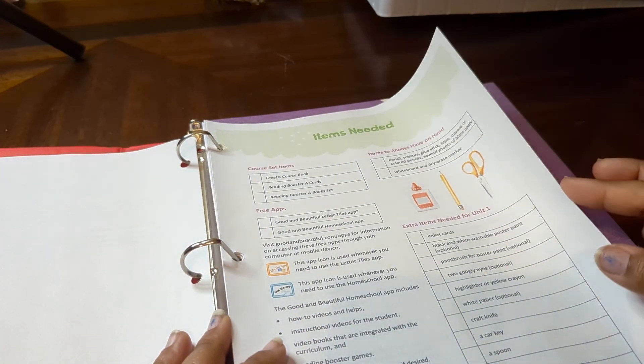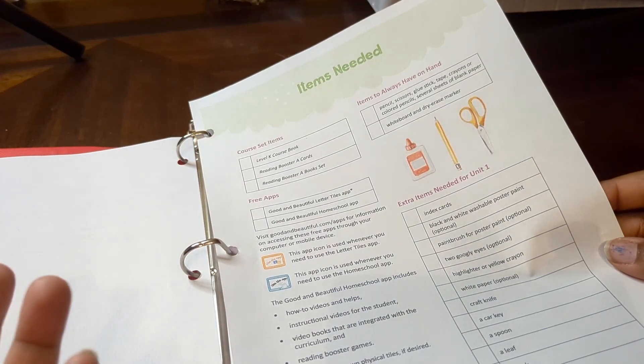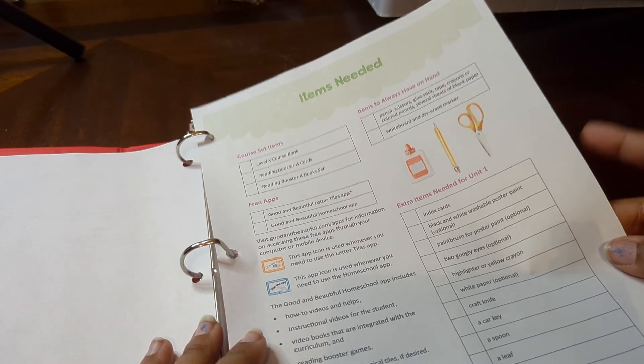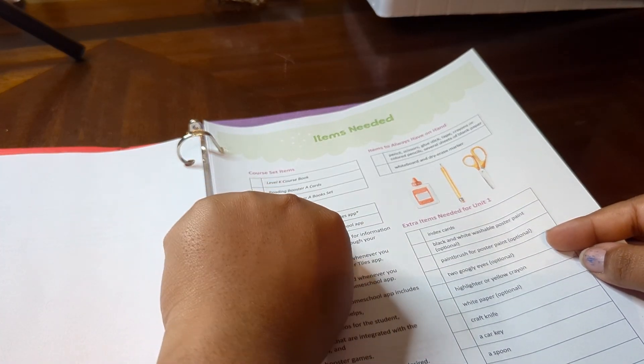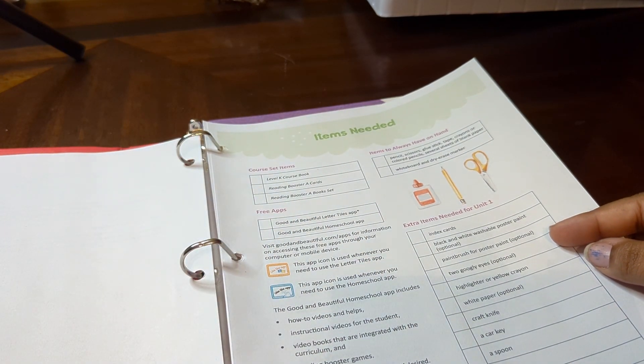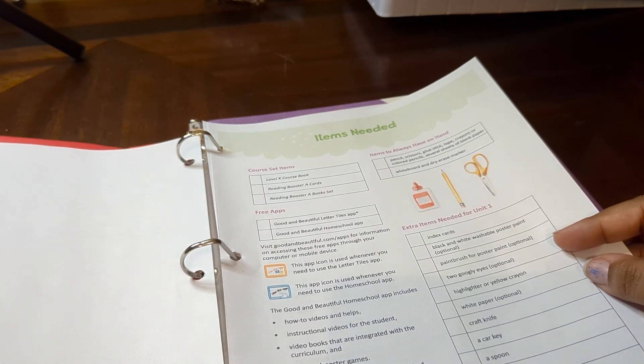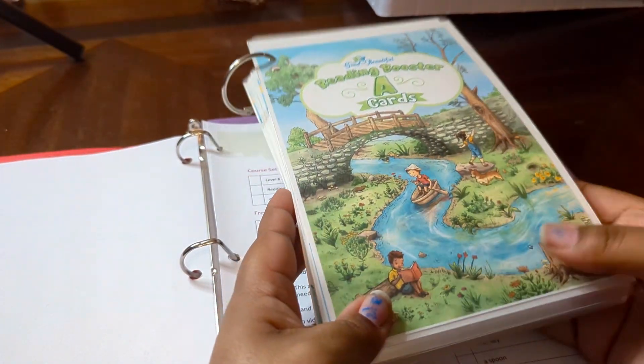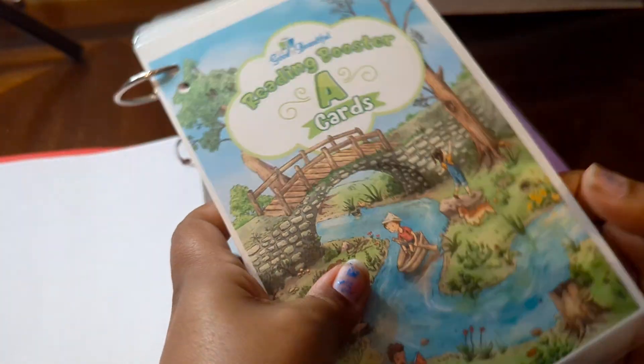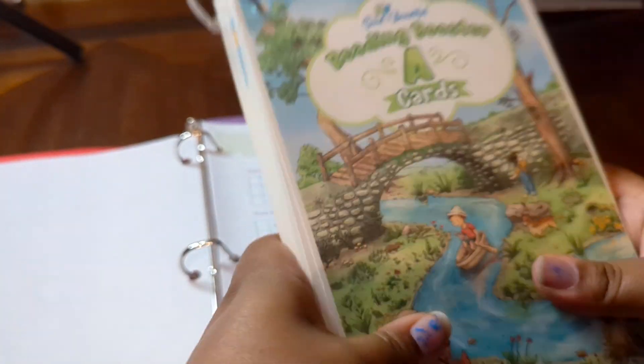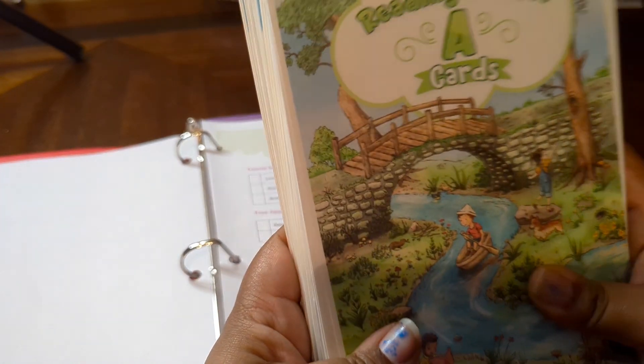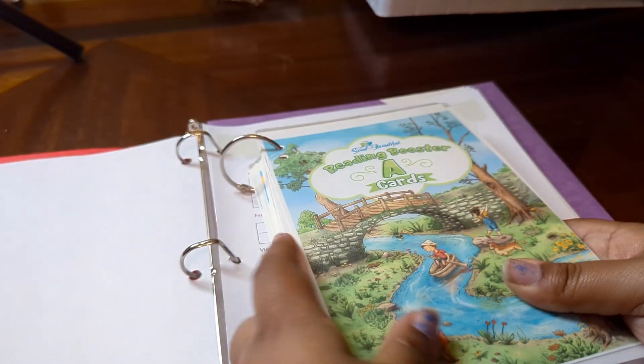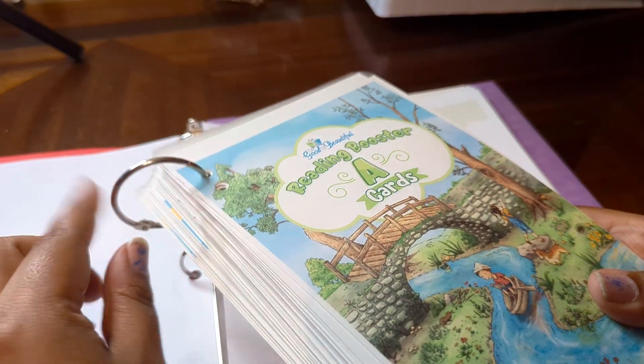Then we have the items needed. So, this is a page that lets you know what you're going to need. Basically, some extra items that you're going to need. Well, this is what your course set comes with. So, it comes with the course book. The reading booster cards, which I will go ahead and show you now. These also come as a PDF print. This lovely pack, I can absolutely not take credit for. One of my friends was so gracious enough to put this all together. She used it for her child and they were done with it. So, she gifted it to me.